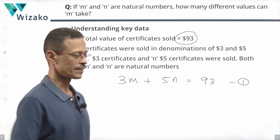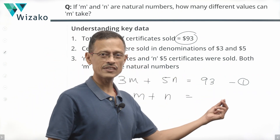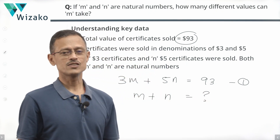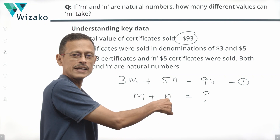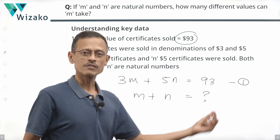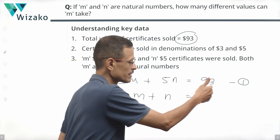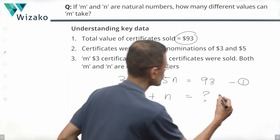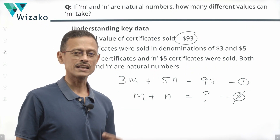We need a second equation — the total number of certificates sold. So M + N equals some number. If they sold 11 certificates, or 17, or 93, we could solve it. But that number is missing, and that's what makes this question not have a unique value for M and N. Since A1/A2 ≠ B1/B2 (3/1 ≠ 5/1), two equations would give a unique answer — but the right-hand side of the second equation is missing. Both M and N must be positive integers.